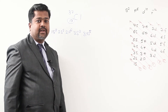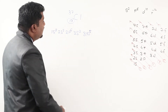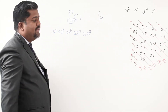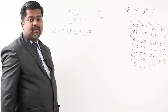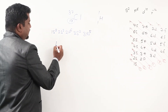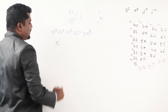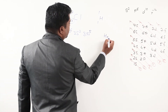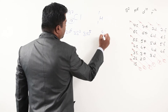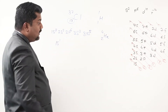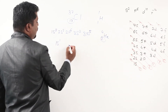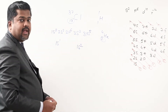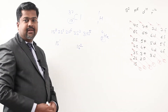You can check out electronic configuration of hydrogen: atomic number 1 — configuration is 1s1, no further. Helium: atomic number 2 — electronic configuration is 1s2. Like that, this is very simple — we can check out the electronic configuration of any of these elements.